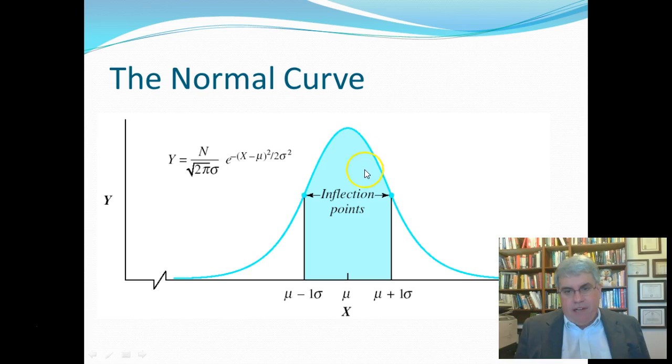Here it's kind of concave. Here it's more convex. And the point where it moves from concave to convex is called the inflection point. And that is one standard deviation above and one standard deviation below the mean. So if it had a higher standard deviation, it would be a wider curve. And if it was a smaller standard deviation, it would be a narrower curve.